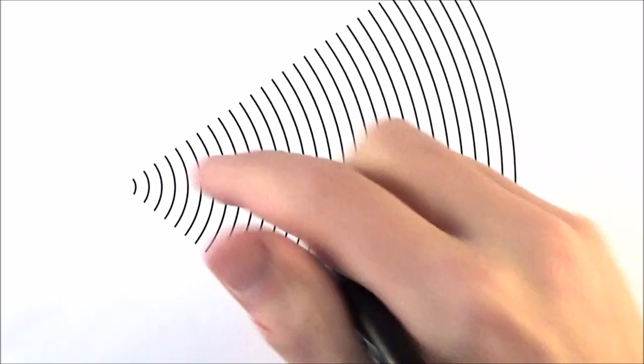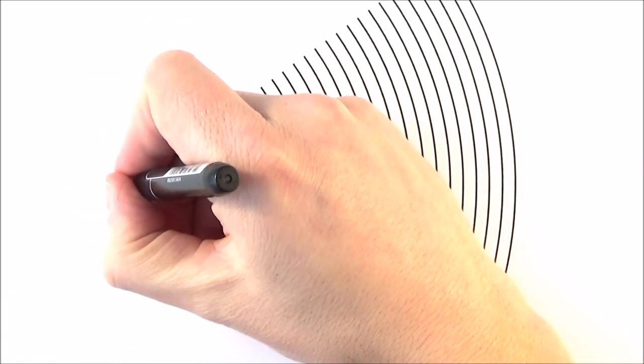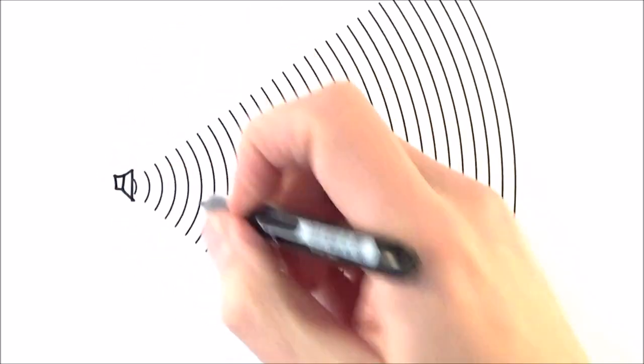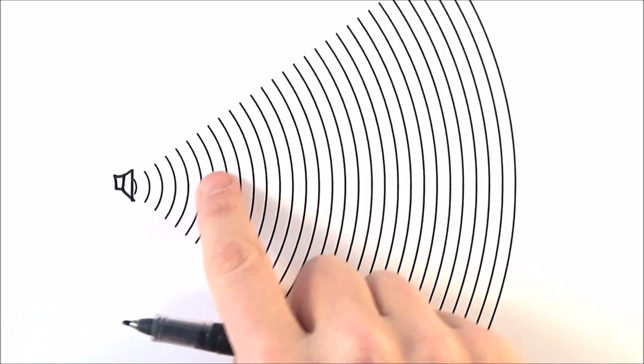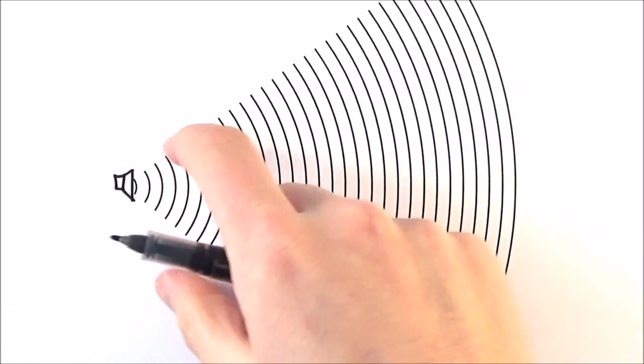What I'd like to think about is if we had a loudspeaker that was emitting a sound wave, perhaps of a constant frequency and a constant loudness, we might get a picture of the sound waves that looks like this as they spread out.